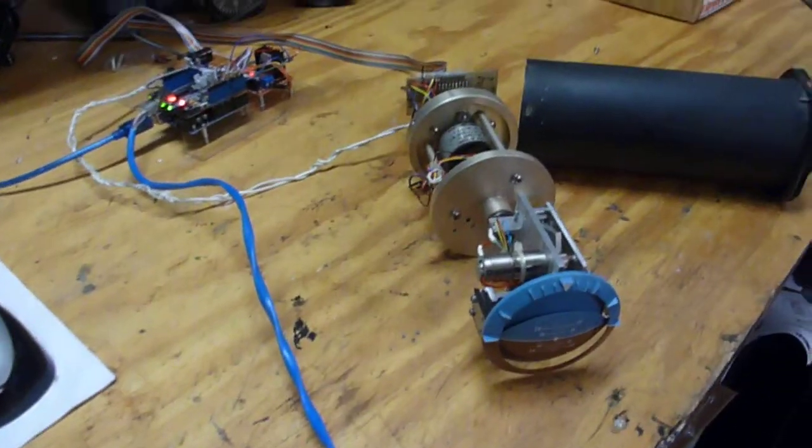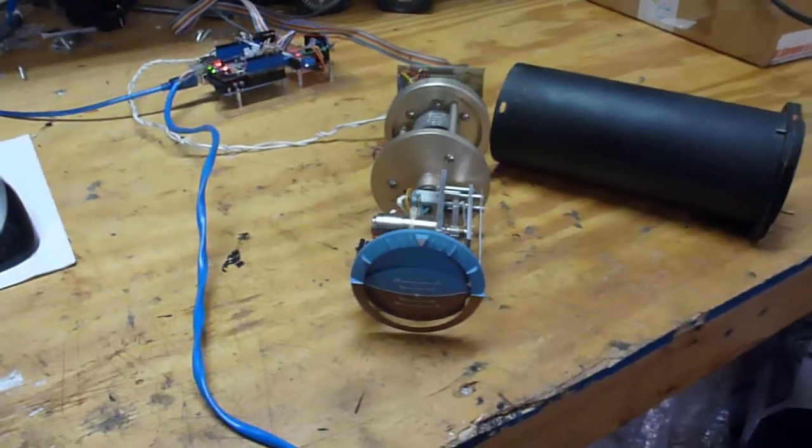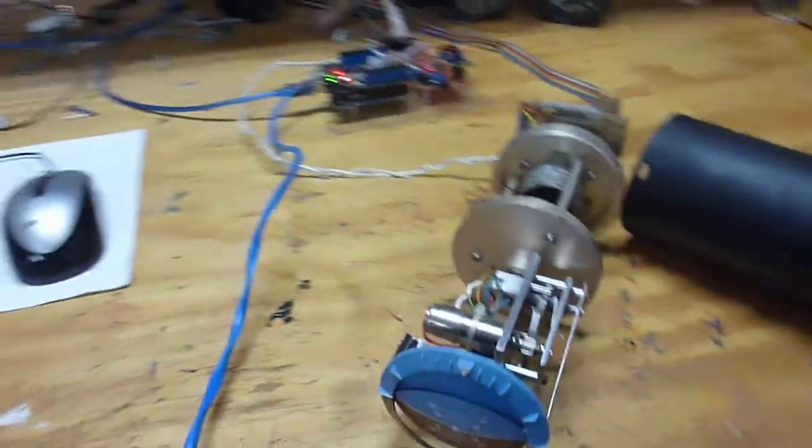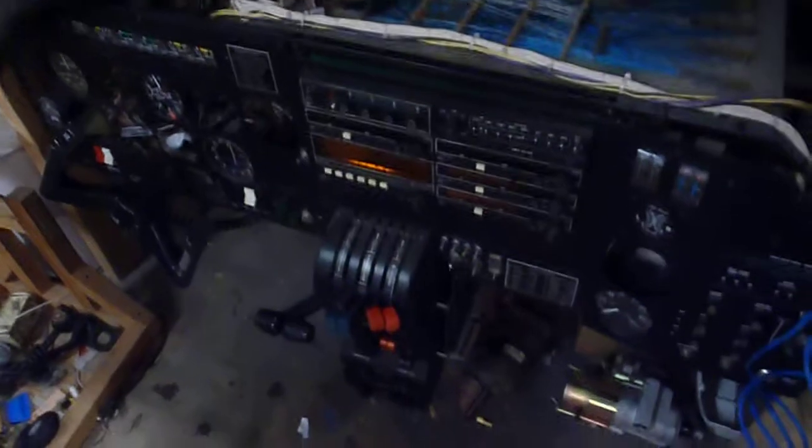All right, today we have something very nice. This is an attitude indicator built for a simulator, actually designed for the AST 300 which you can see right there. That's what it came from. I'm working on trying to convert some of the instruments in this simulator to work with X-Plane.